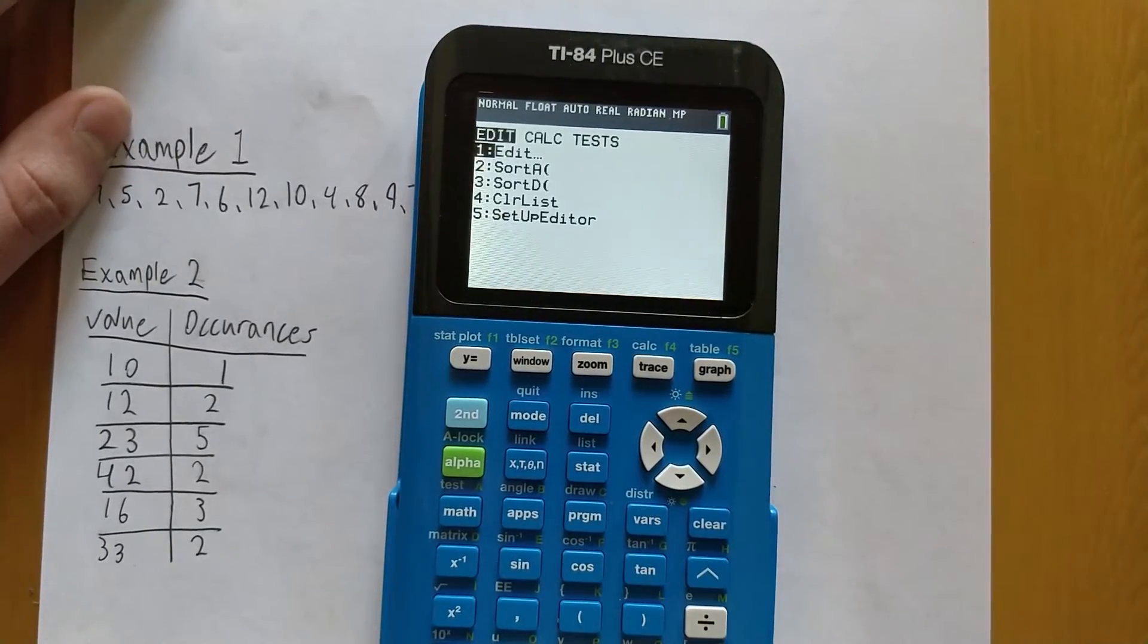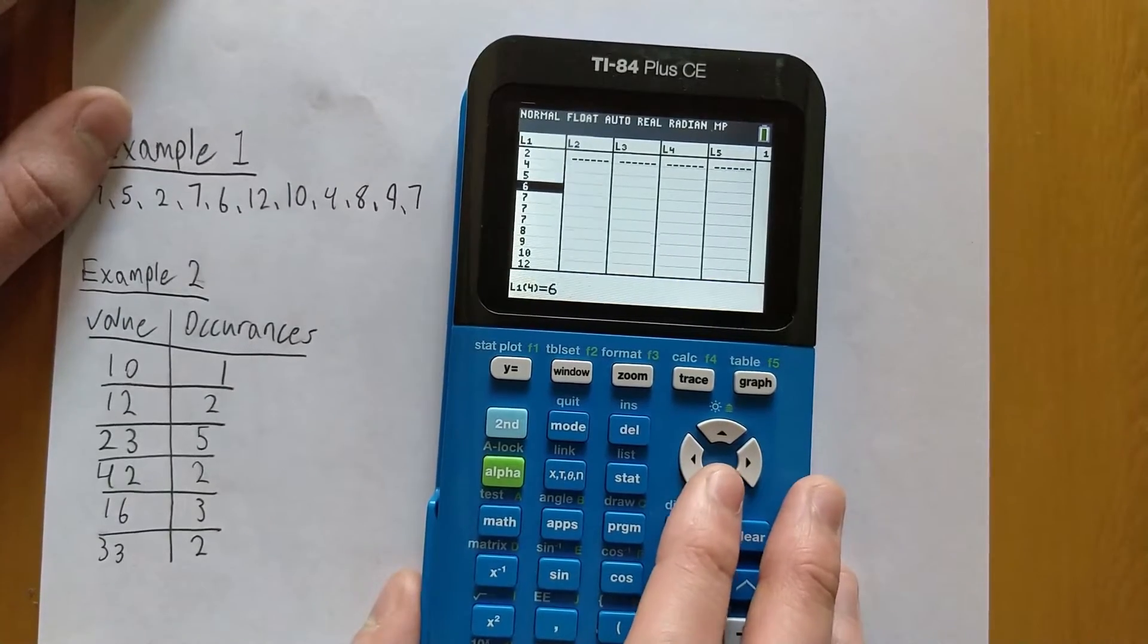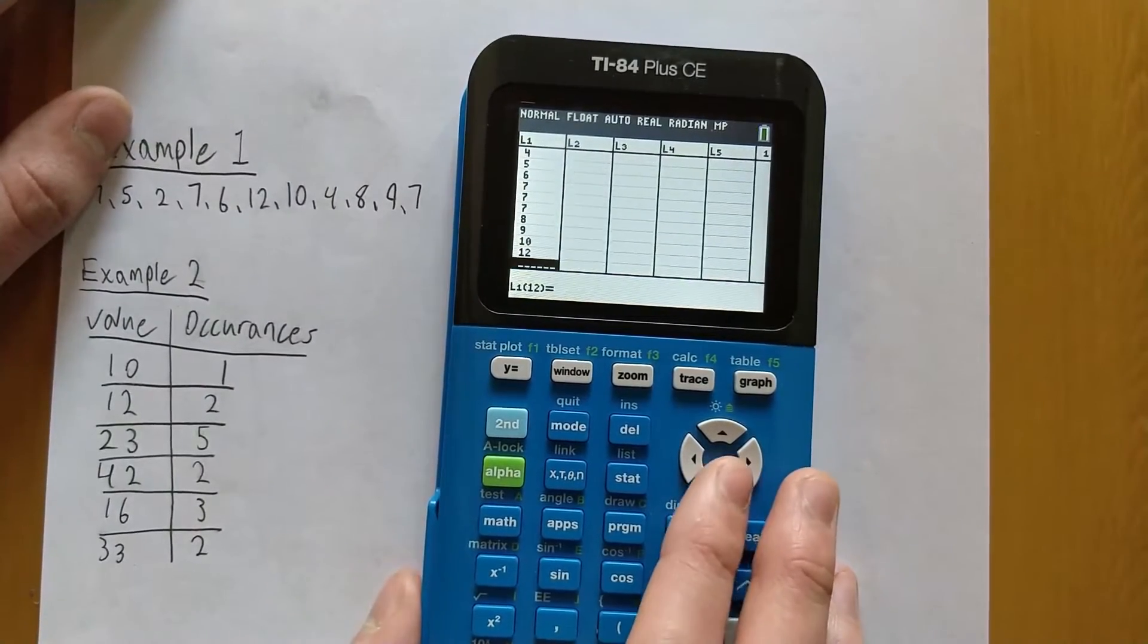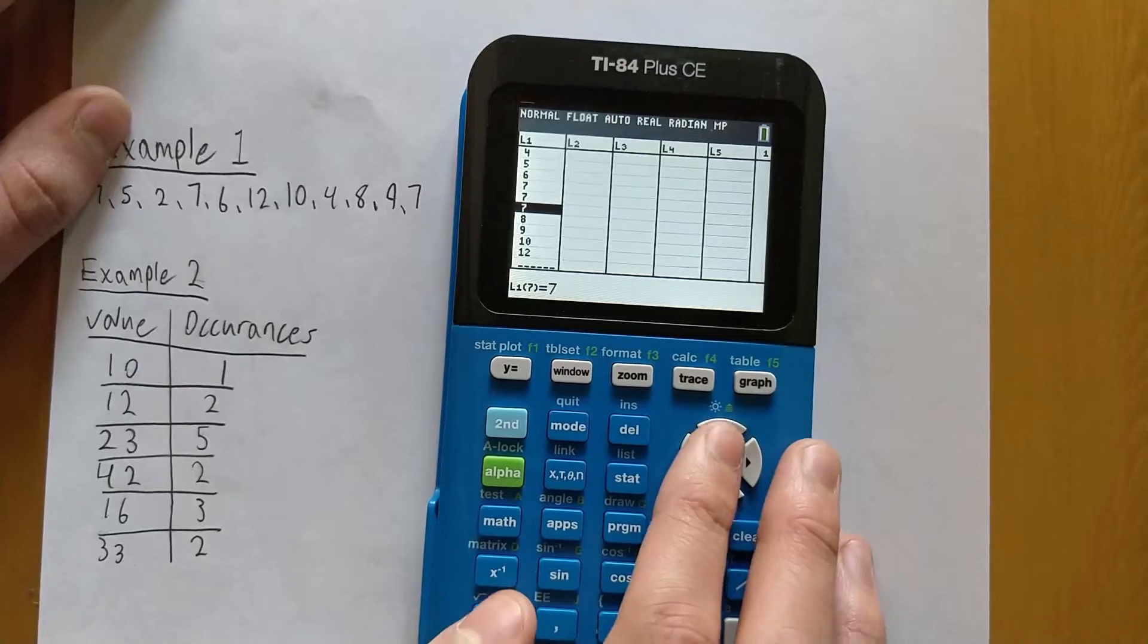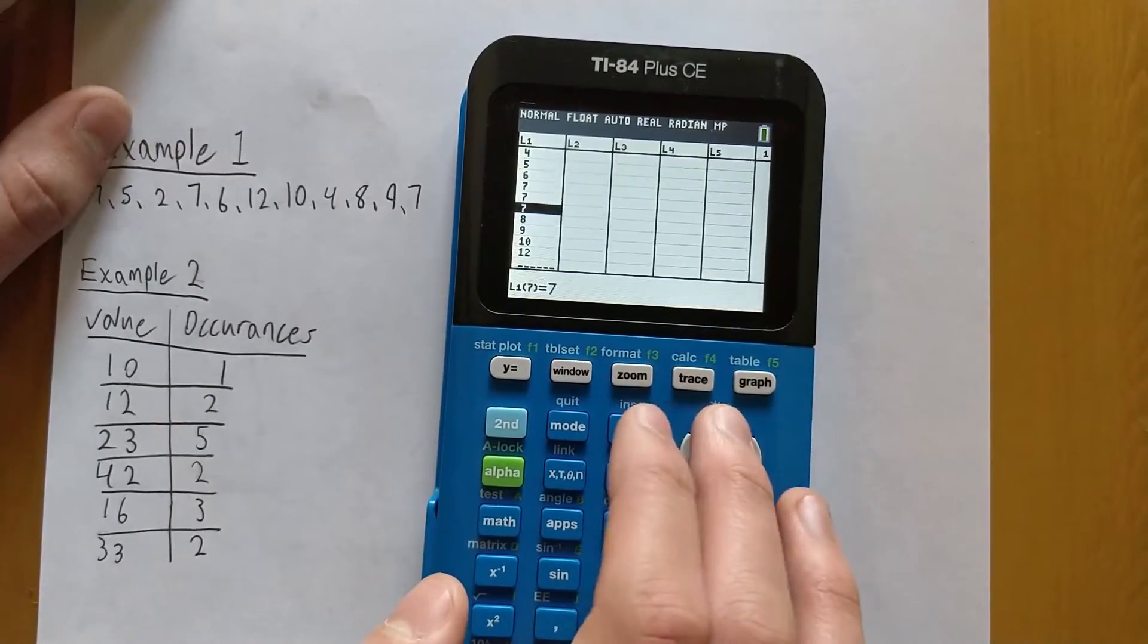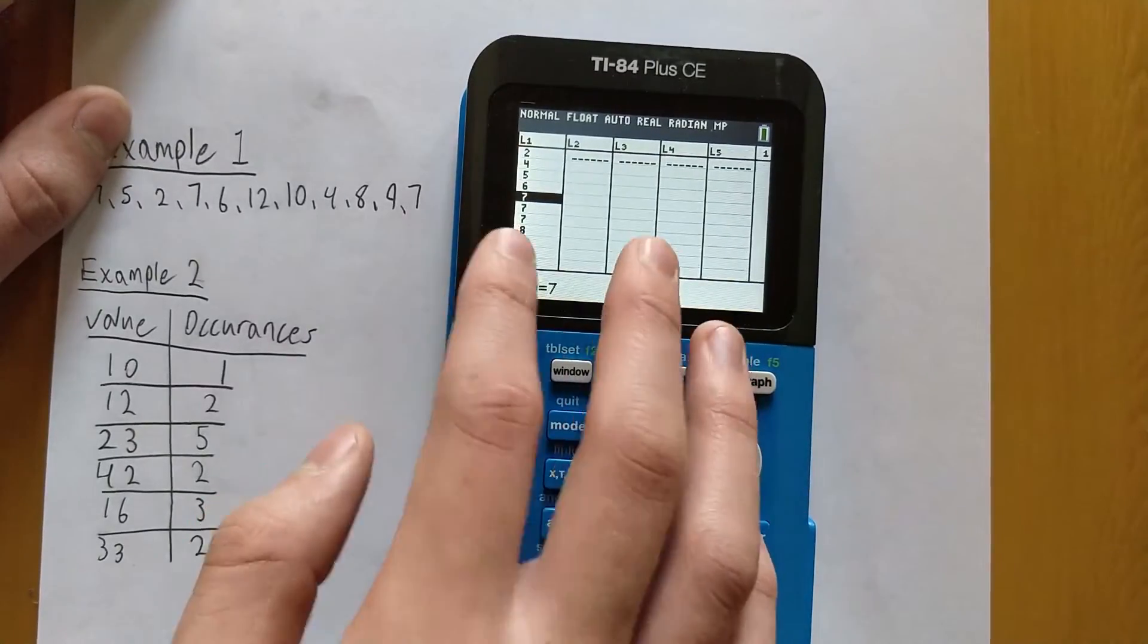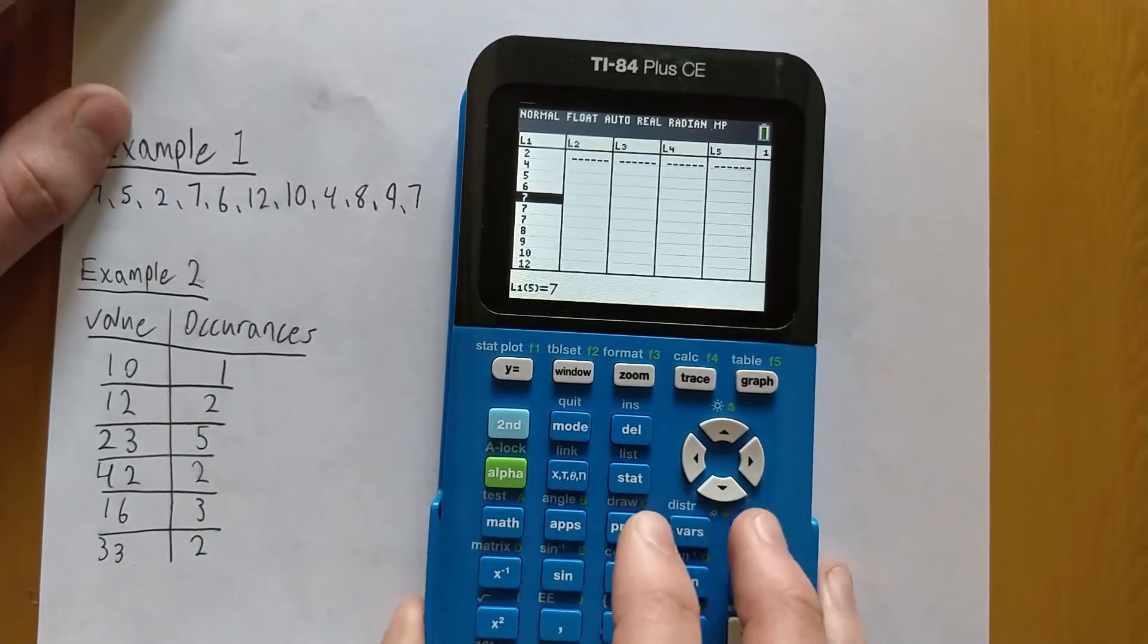So now if I go back to STAT, go back to Edit, you can see that L1 is now sorted in ascending order and you can just look for the mode here. You can see that 7 is listed three times in a row, and there isn't really any other value that is listed that many times in a row. So we know that 7 is the mode because it appears the most number of times in the data set.